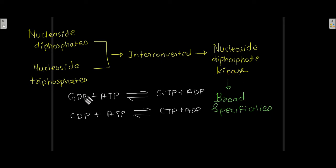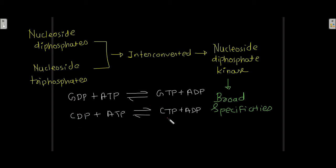As you can see, GDP plus ATP gives GTP plus ADP. GDP is getting converted into GTP and CDP is getting converted into CTP. These kinds of reactions are catalyzed by nucleoside diphosphate kinase enzymes.